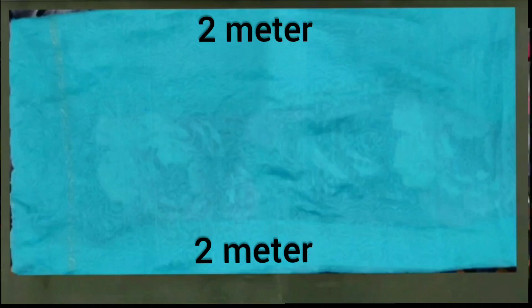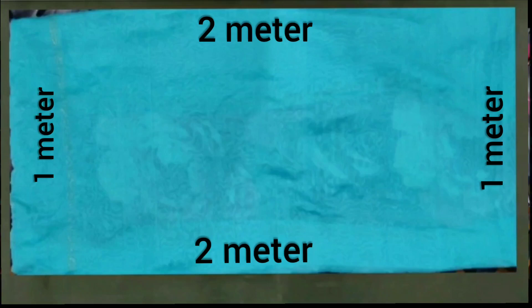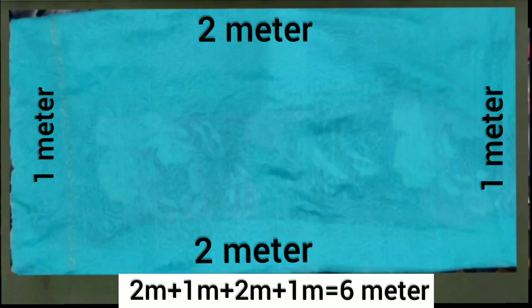When Rani's mother measured her dupatta, she saw the length of one side is 2 meters and the length of the side opposite to it is also 2 meters. The length of another side is 1 meter and the length of the side opposite to it is also 1 meter. So the total length is 2m + 1m + 2m + 1m = 6 meters. Rani's mother required 6 meters of gotha for her dupatta.